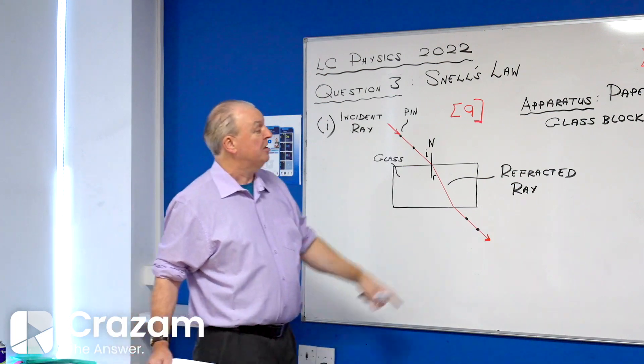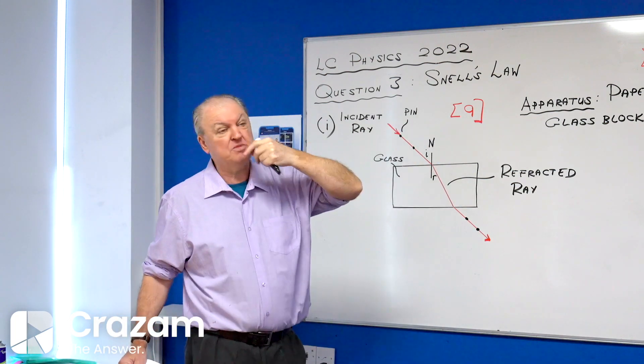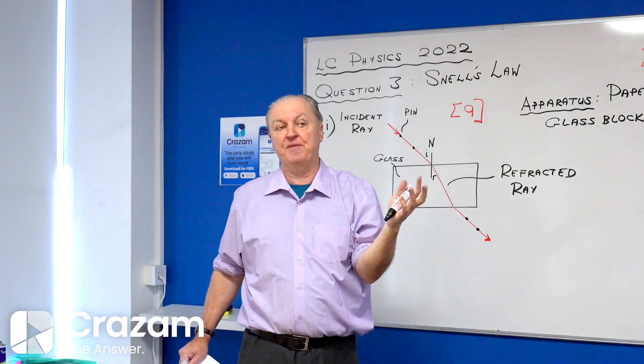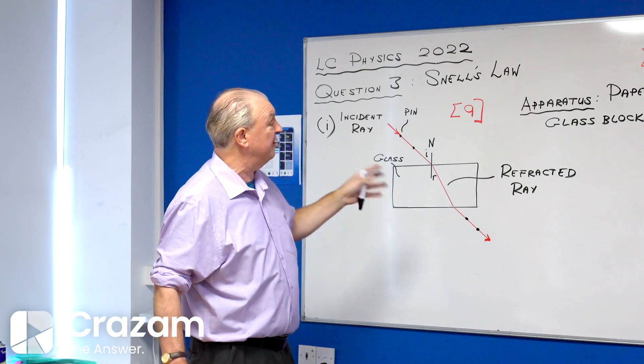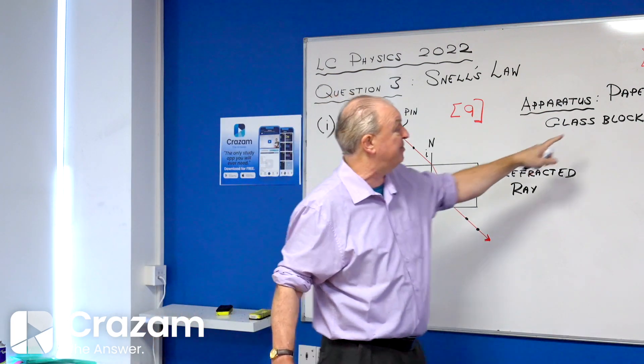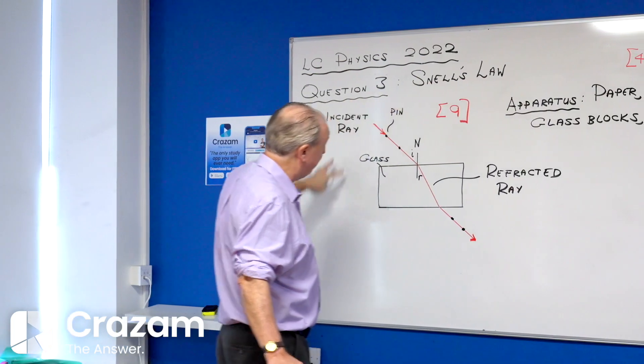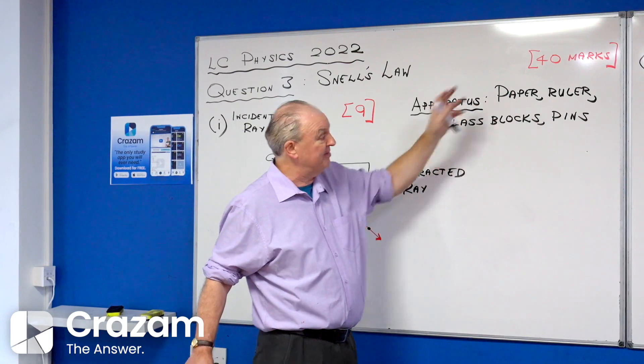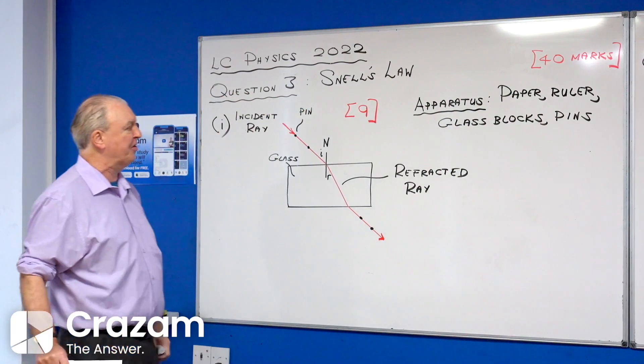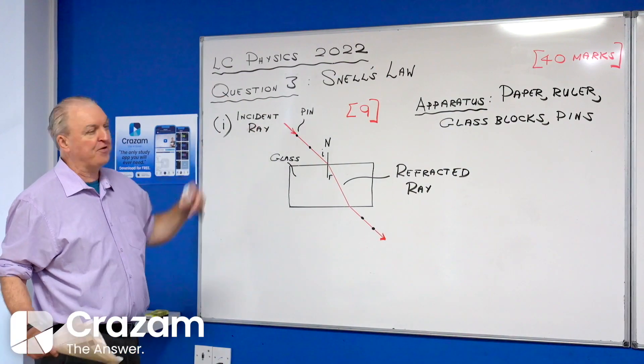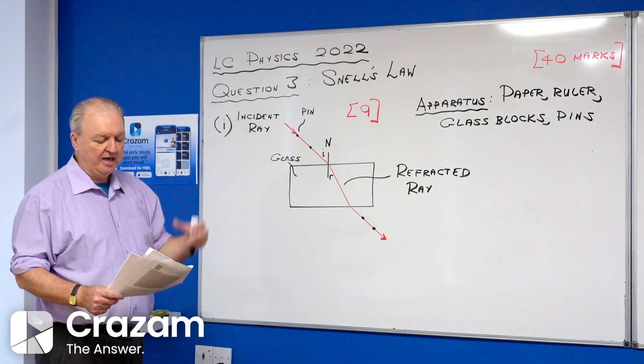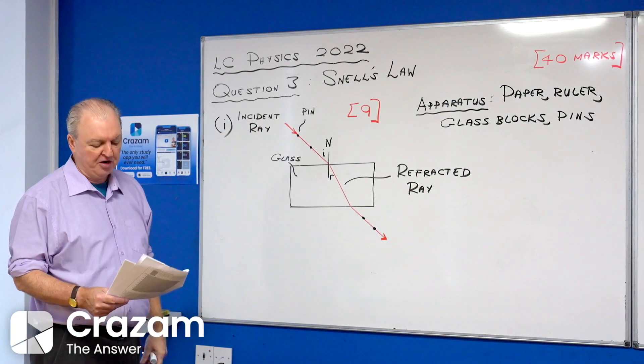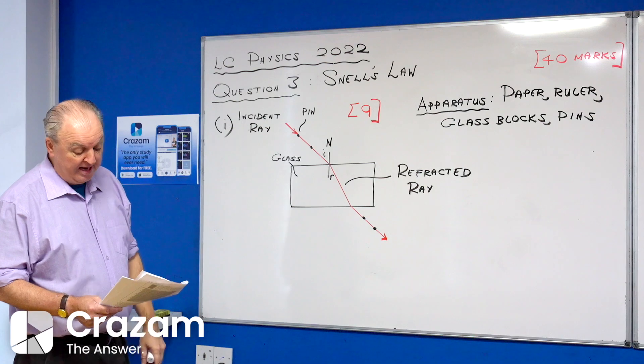I've got my pins put in as well. I've listed the apparatus here. Sometimes things aren't shown in the diagram like the paper the whole thing is sitting on, or the ruler, so I'll list the apparatus to capture all the other stuff as well. Nine marks for the diagram, that's standard.